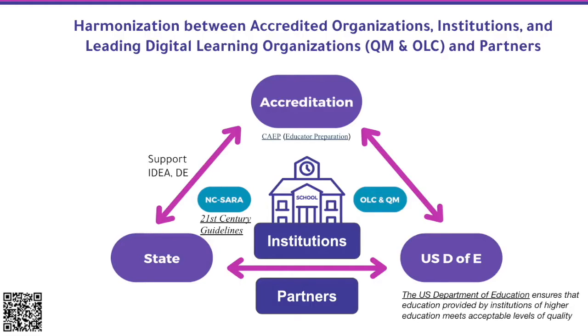As you can see on the right side, between accreditation and the U.S. Department of Education, OLC and Quality Matters are there to help bridge the gap between the high level of theory and what needs to be done in a classroom — such as developing learning activities, course content, and all those guidances to help educators. It's key to make sure those things work together and support each other, causing harmonization between these processes.